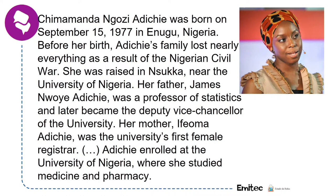A gente escolhe uma mulher bem potente: Chimamanda Ngozi Adichie, que está nesse contexto de mulheres empoderadas, de mulheres que realmente buscam fazer alguma coisa para empoderar a mulher dentro desse contexto social. E aí tem esse texto que a gente vai ver que é um texto biográfico — porque a gente está falando da vida da Chimamanda Adichie. Geralmente, em um texto biográfico, o que predomina são os verbos no tempo passado.